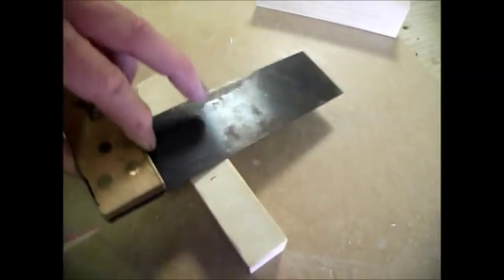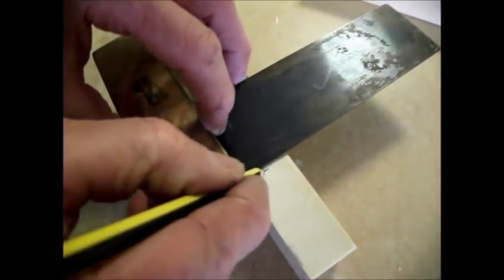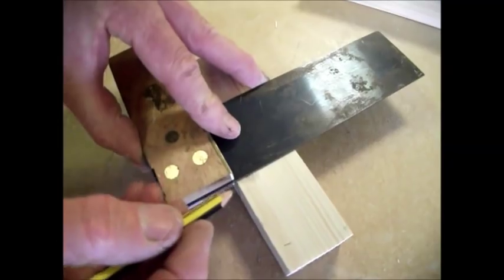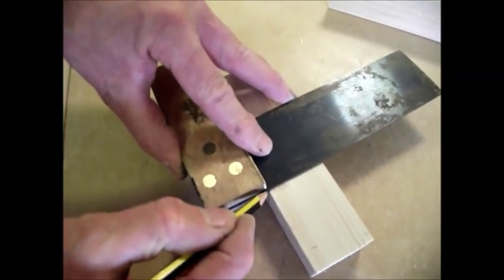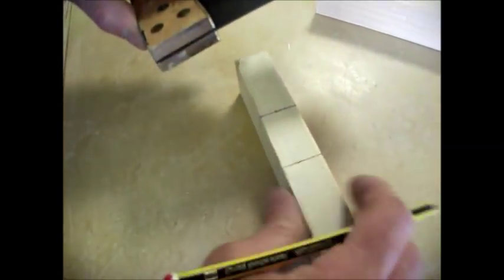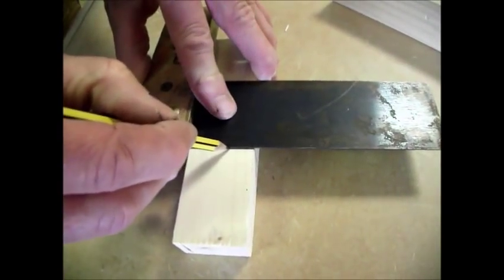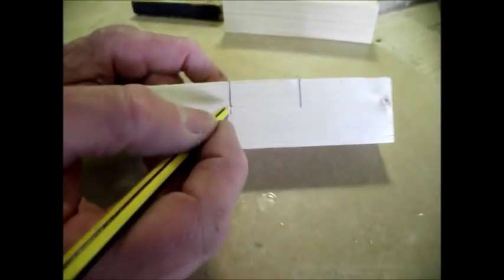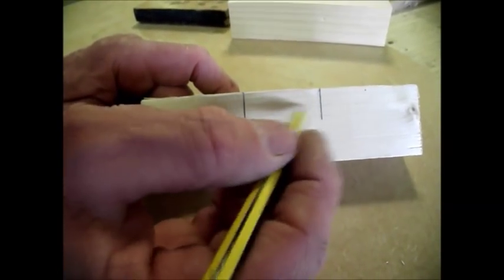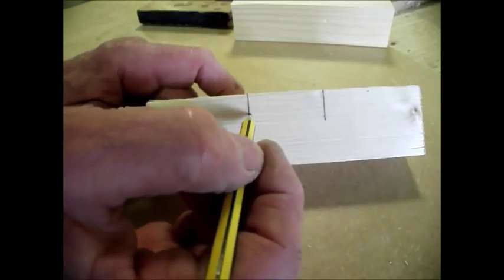Same on the other end. So that gives us the two lines that we need to saw down. The next thing we need to know is how far to saw. We don't want to go all the way. We need to know where to stop.